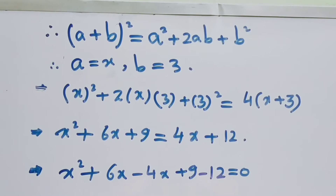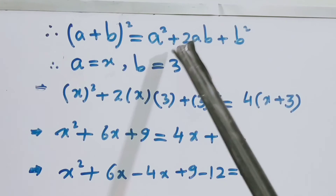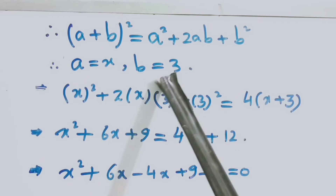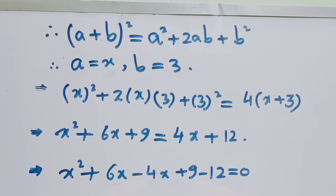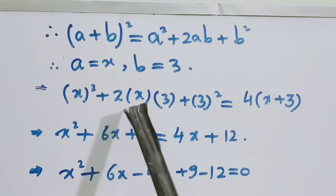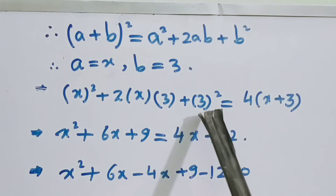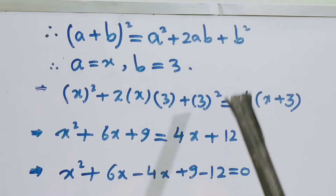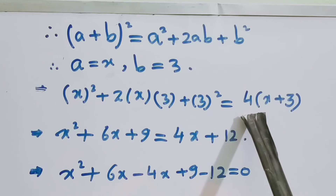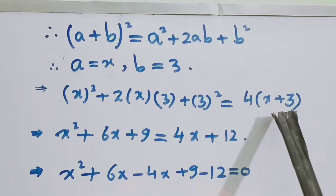The square of (x + 3) will be expanded with the formula (a + b)² = a² + 2ab + b², where a = x and b = 3. So we expand: x² + 2 × x × 3 + 3² on the left-hand side. On the right-hand side, (−2)² is 4, and root of (x + 3) whole square means the square and root cancel, giving 4 times (x + 3).